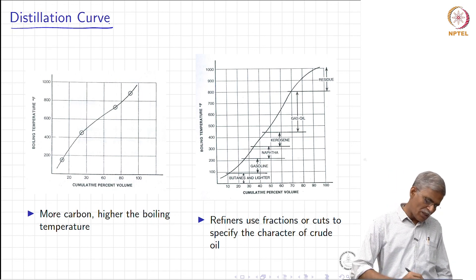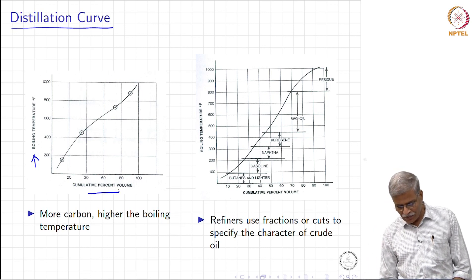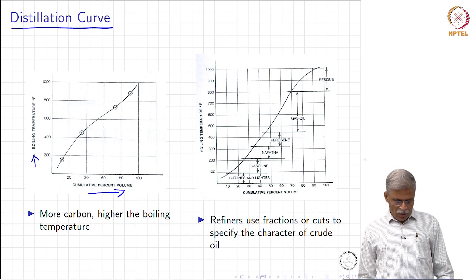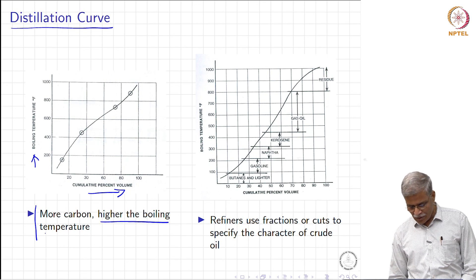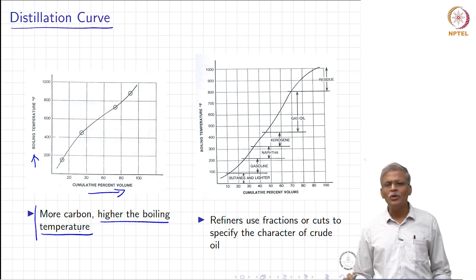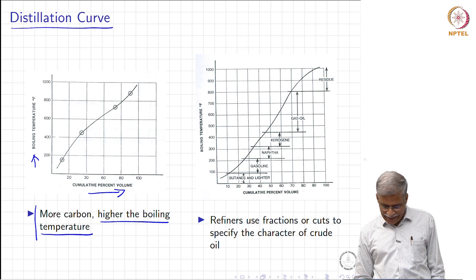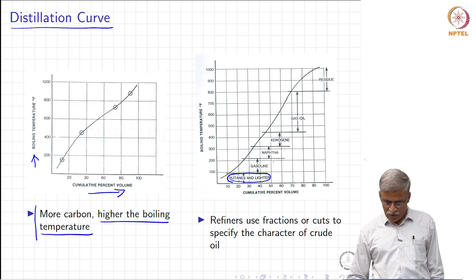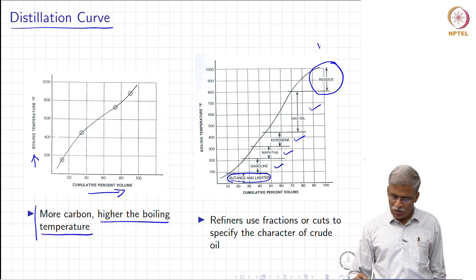On the distillation curve, the y-axis shows boiling temperature in Fahrenheit and the x-axis shows cumulative percentage volume. If there is going to be more carbon, the boiling temperature is going to be much higher. When you start heating a sample of crude oil, you get first butanes and lighter fractions, followed by gasoline, naphtha, kerosene, and gas oil. Finally, we end up with the residue, which is what we are interested in.